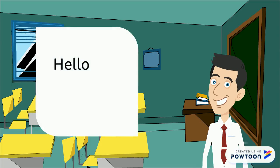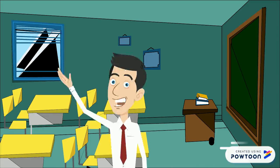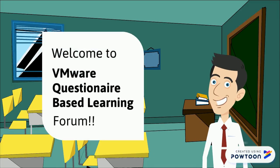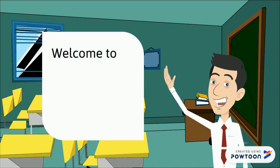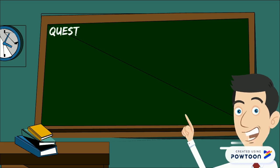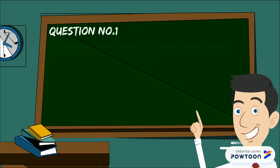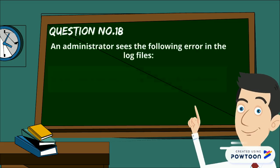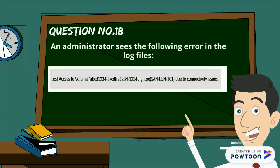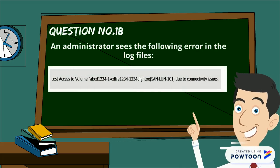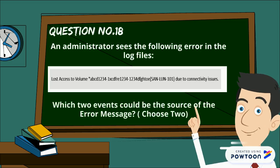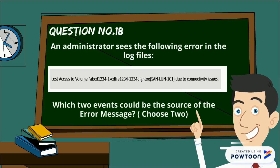Hello Awesome Professionals. Welcome to VMware Questionary Based Learning Forum. Here goes our question number 18: An administrator sees the following error in the log files — 'Lost access to volume SAN LUN 101 due to connectivity issues.' Which two events could be the source of the error message?